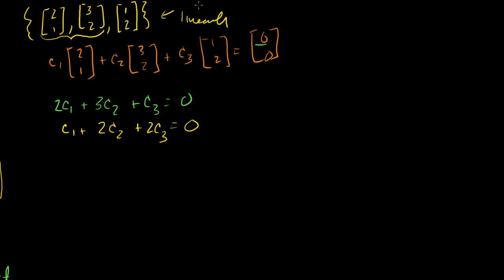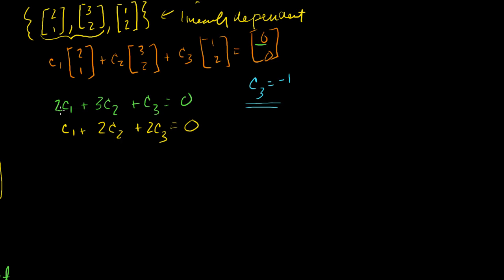But I'm going to show it using our theorem. Setting up the equations: 2c1 plus 3c2 plus c3 equals zero, and c1 plus 2c2 plus 2c3 equals zero. With three unknowns in two equations, there aren't enough constraints. So I can just pick c3 freely — I'll pick c3 equal to negative one. Substituting: 2c1 plus 3c2 minus 1 equals zero, and c1 plus 2c2 minus 2 equals zero.